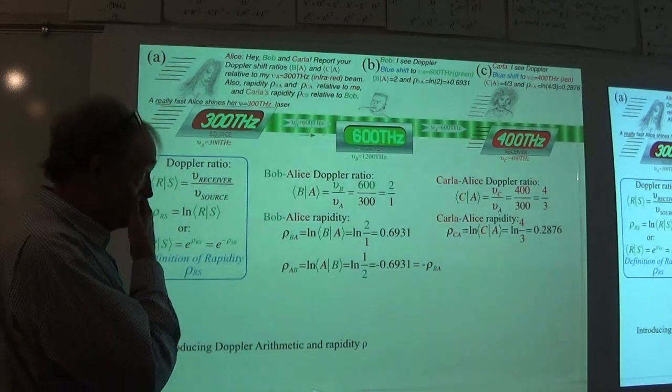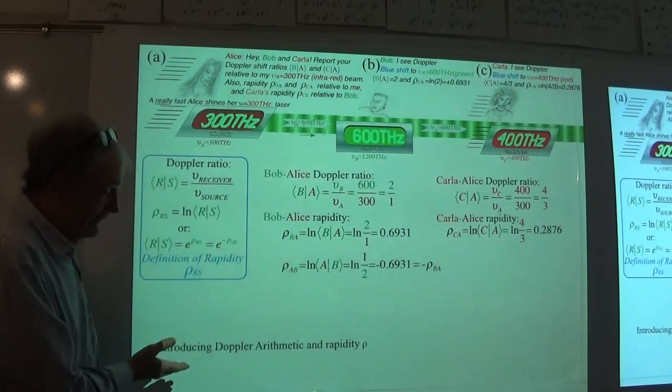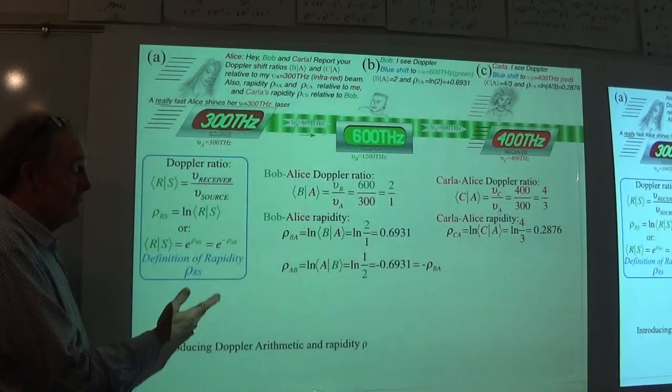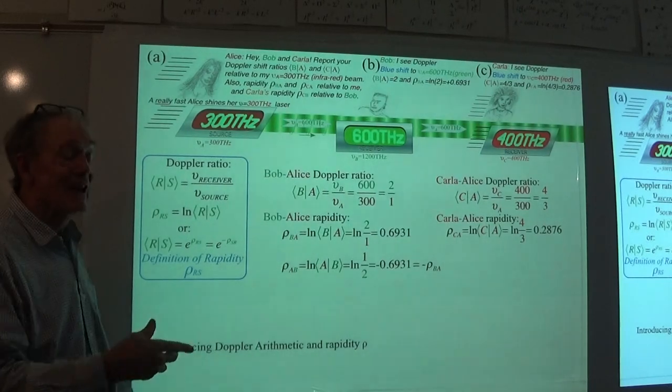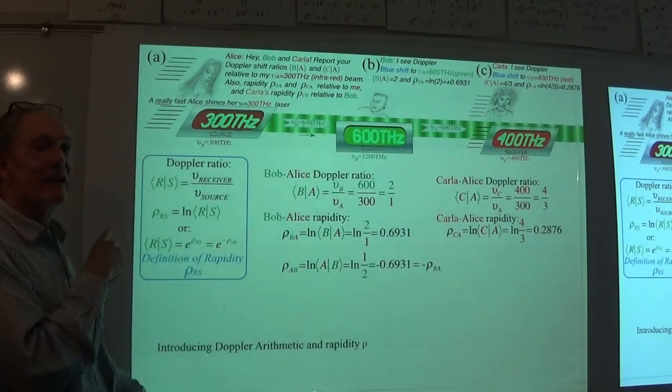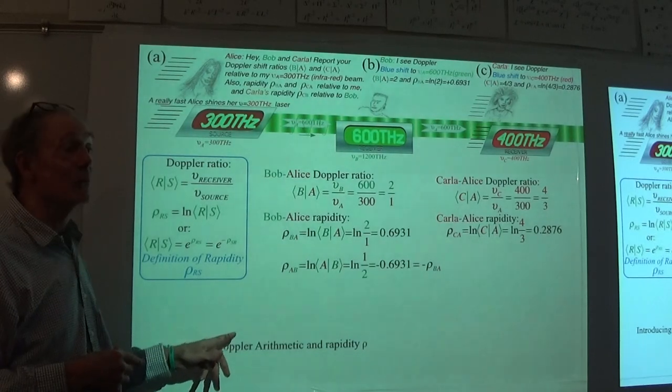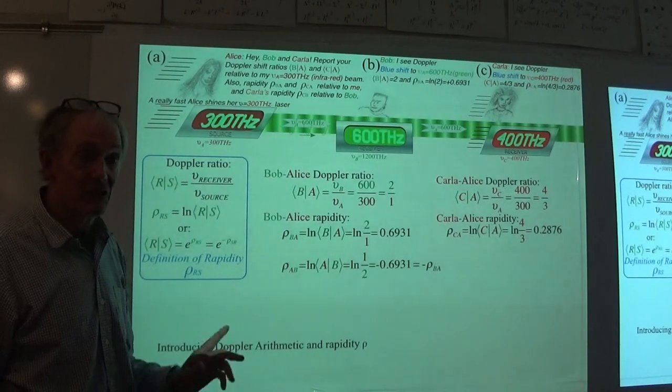What I want to show you is that that particular quantity, using that as a measure of velocity, is really cool. Because then Galileo, who we've completely defeated here, comes back. And he gets to do his sum rule with rapidity and it works perfectly. That's what I want to make sure I show you here.